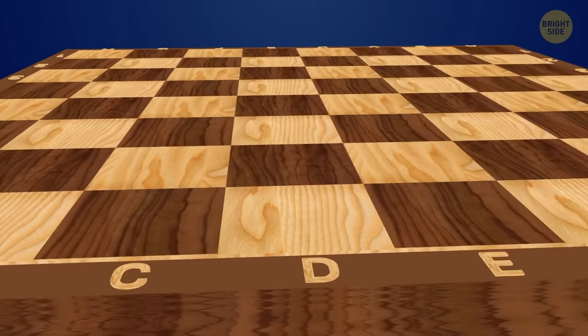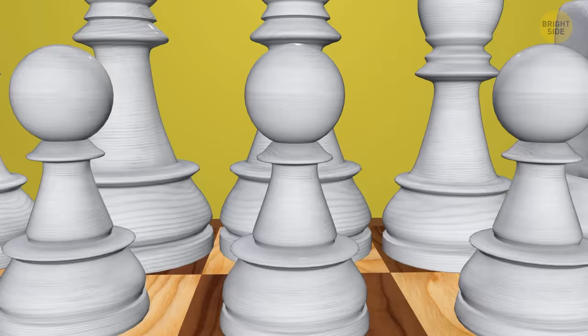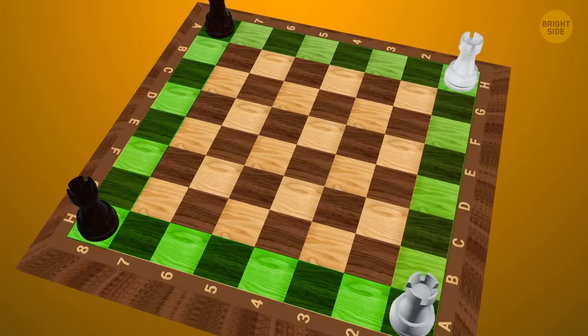The Chess Universe is a board of 64 black and white squares. When you sit down to play, just make sure to position the board so that each player has a dark square in their lower left corner.